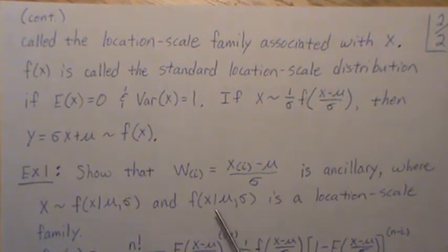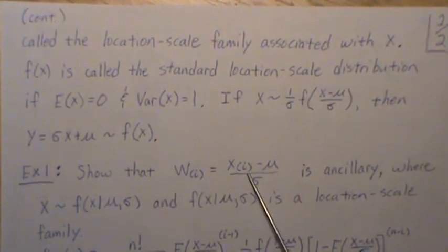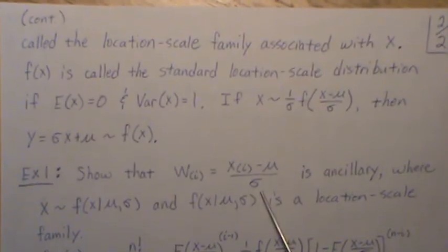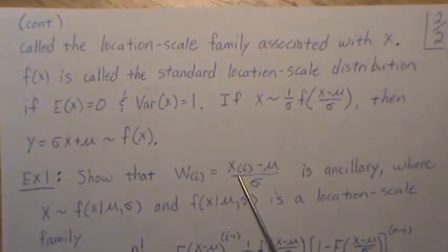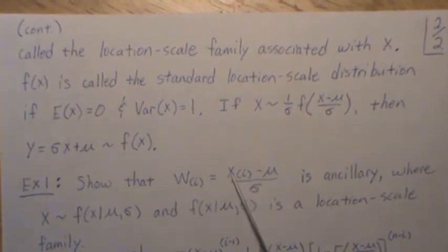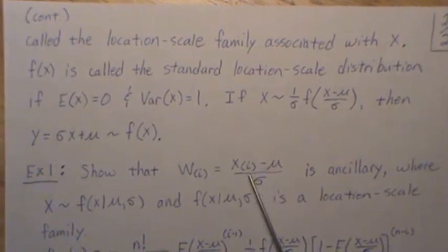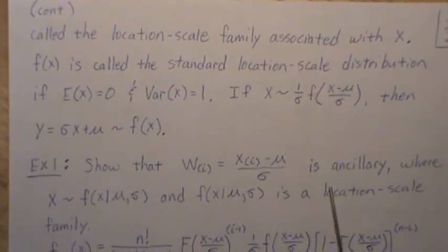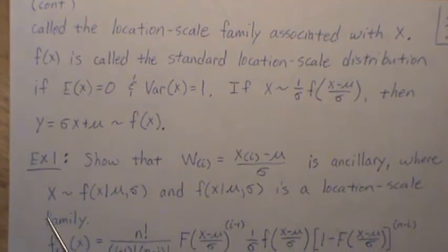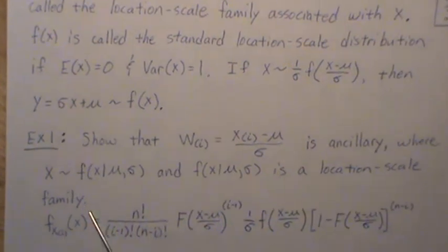Okay, so example one, show that Wi, which is this, so it's Xi minus mu divided by sigma. Now, note this is the i-th order statistic. And actually, it doesn't have, it could be just Xi, and this, what I'm getting ready to show you still works, but we're using the i-th order statistic. We're going to show that this is ancillary where X is F of X given mu and sigma, and that this density is a location scale family.